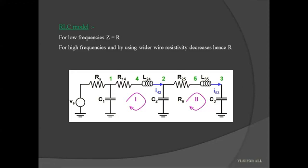The next one is the RLC model. So far we have discussed low-frequency models, where impedance is dominated by resistance. If we use high frequencies and wider wires, the resistance decreases — because according to R = ρL/A, a wider wire means larger area and thus lower resistance. Consequently, inductance comes into the picture. In this model, we consider R, L, and C — that's why it is the RLC model. This is how the RLC model looks like.